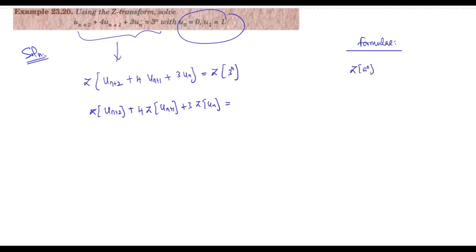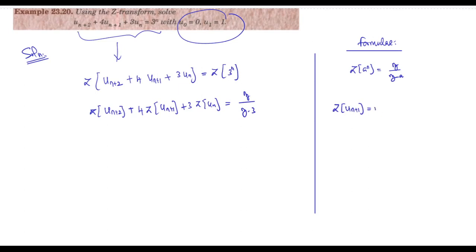We need a couple of formulas. What is Z{A^n}? It's simply Z/(Z−A). So here, instead of A^n it's 3^n, therefore Z{3^n} = Z/(Z−3). Now, what is Z{U(n+2)}? Using shifting rules: Z{U(n+1)} = Z·U(Z) − Z·U(0) − U(1)·Z^(−1). You can continue this pattern for higher shifts.